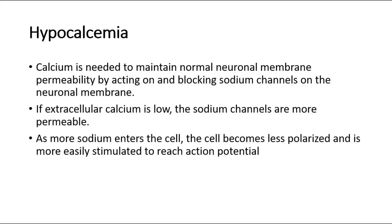The mechanism of a positive Trousseau's sign is due to increased neuronal excitability. For hypocalcemia, calcium is needed to maintain normal neuronal membrane permeability by acting on and blocking sodium channels on the neuronal membrane. If extracellular calcium is low, the sodium channels are more permeable. As more sodium enters the cell, the cell becomes less polarized and is more easily stimulated to reach action potential, causing the muscle contraction to occur.